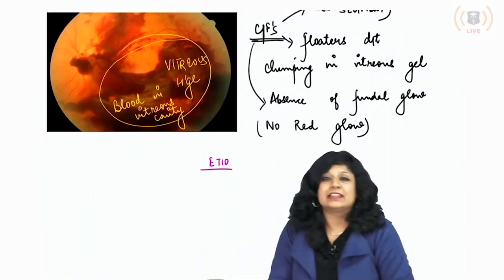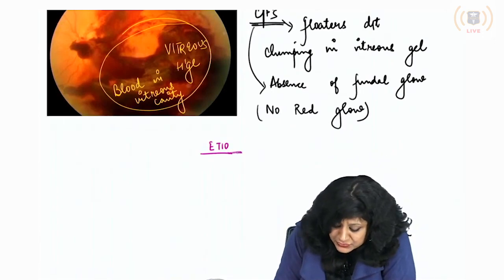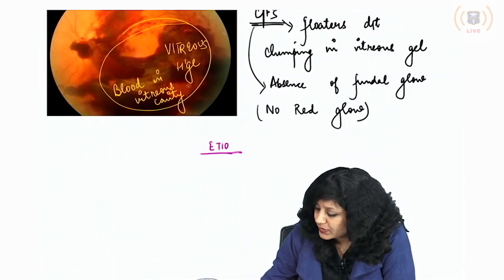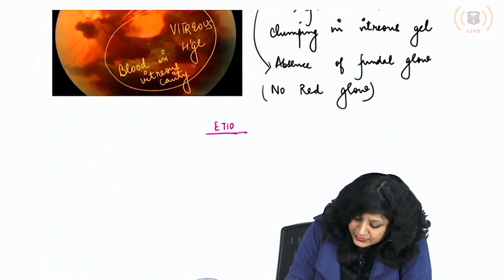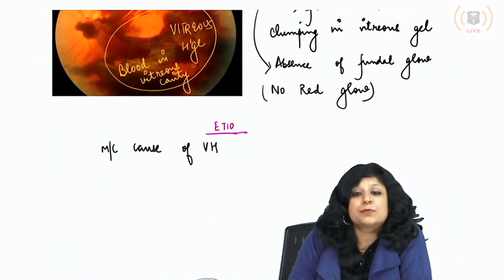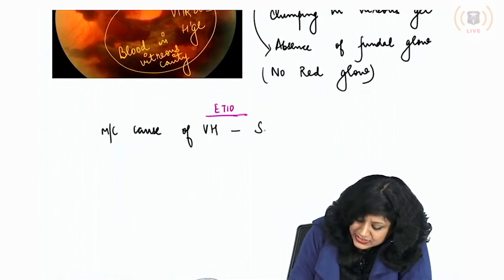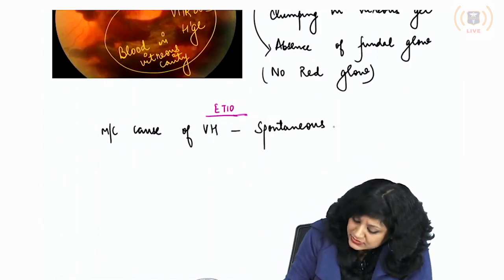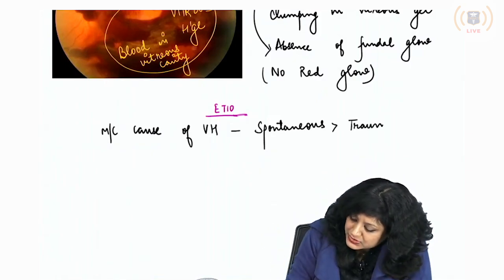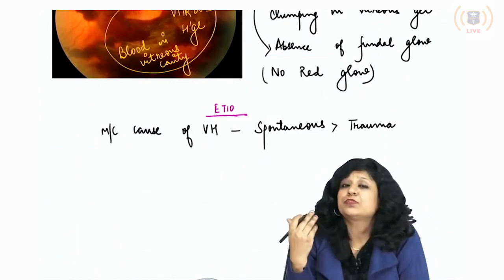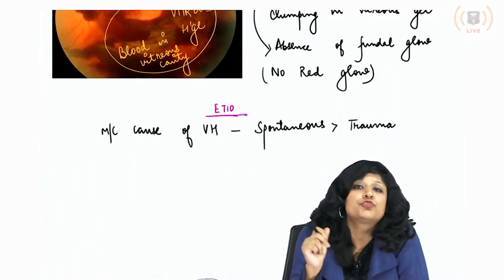Looking at the etiology of vitreous hemorrhage: the most common cause is spontaneous — most of the time you do not know the exact cause. This is followed by trauma. So the most common cause of vitreous hemorrhage is spontaneous, followed by trauma in known cases.